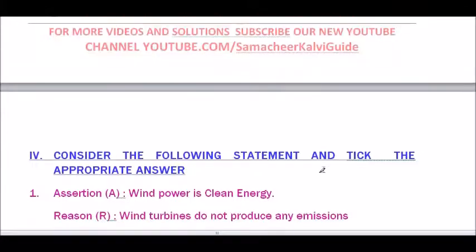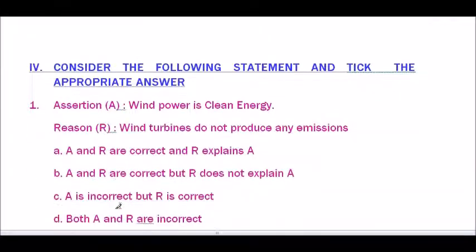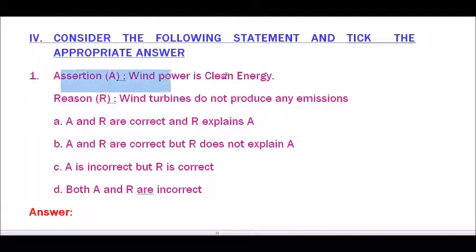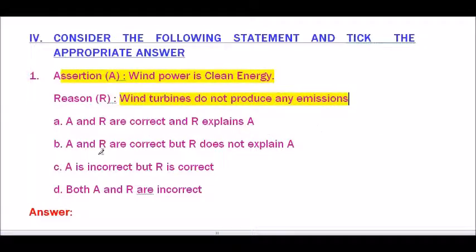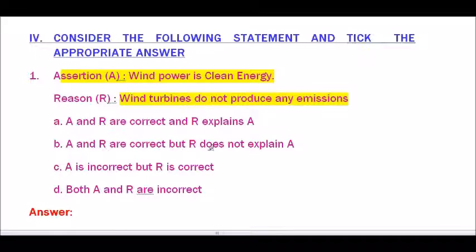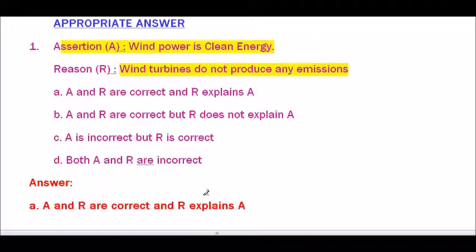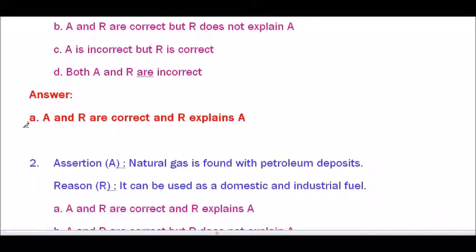Section IV: Consider the following statements and tick the appropriate answer. Question number 1 — Assertion: Wind power is clean energy. Reason: Wind turbines do not produce any emissions. Options: A) A and R are correct and R explains A. B) A and R are correct but R does not explain A. C) A is incorrect but R is correct. D) Both A and R are incorrect. The answer is A — A and R are correct and R explains A.